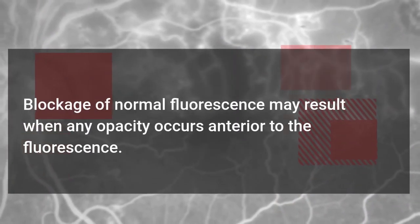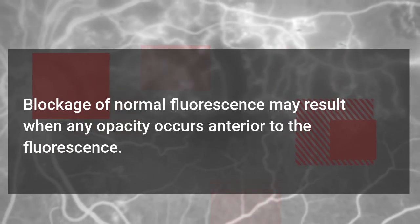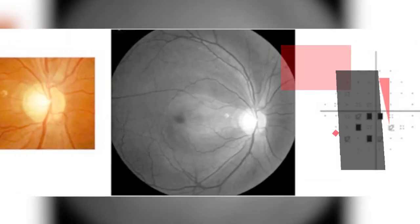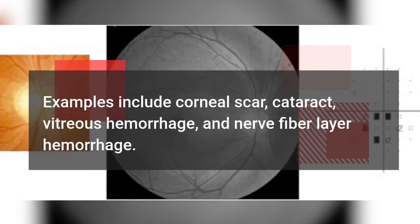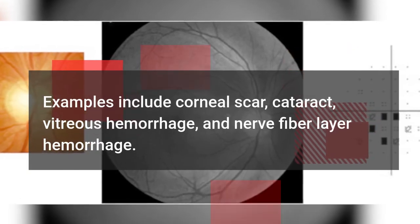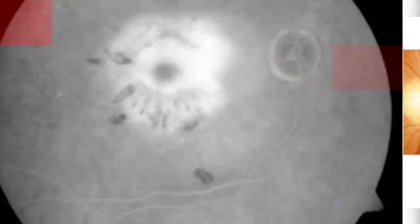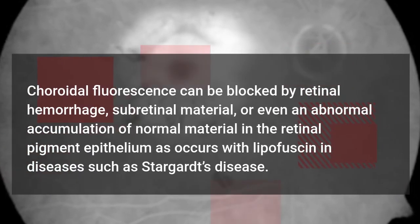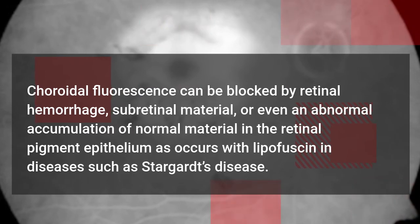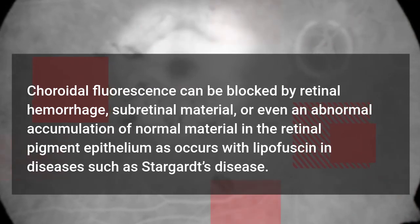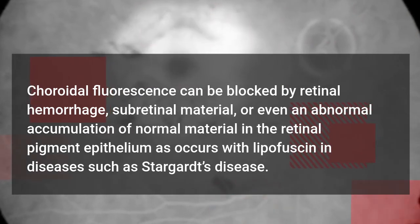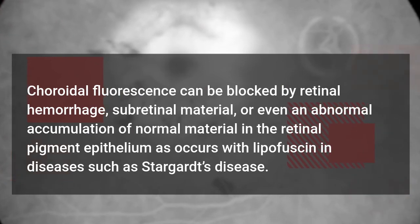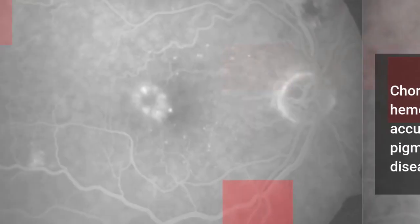Blockage of normal fluorescence may result when any opacity occurs anterior to the fluorescence. Examples include corneal scar, cataract, vitreous hemorrhage, and nerve fiber layer hemorrhage. Choroidal fluorescence can be blocked by retinal hemorrhage, subretinal material, or even an abnormal accumulation of normal material in the retinal pigment epithelium as occurs with lipofuscin in diseases such as Stargardt's disease.